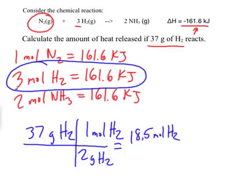So 37 divided by 2 is going to give me 18.5 moles of hydrogen. And according to this, for every three moles of hydrogen, I will get 161.6 kilojoules. So you can sort of think of it as, how many packs of three do I have here? About six.